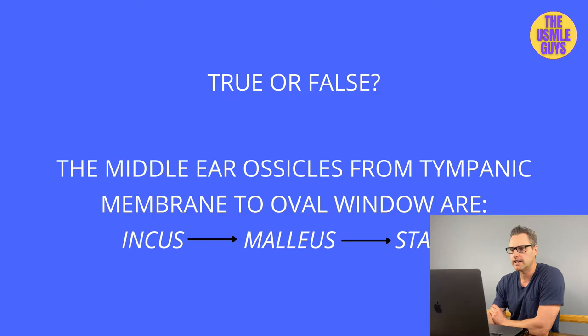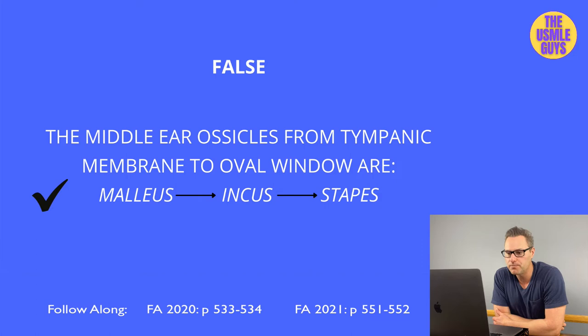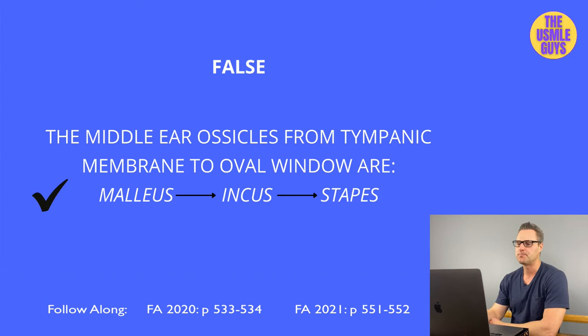This is false. The correct bones are the malleus, incus, and stapes. The middle ear is an air-filled space containing these three ear bones connecting the tympanic membrane to the oval window. The malleus connects to the tympanic membrane, the stapes connects to the oval window, and the incus connects the two to allow sound transmission.